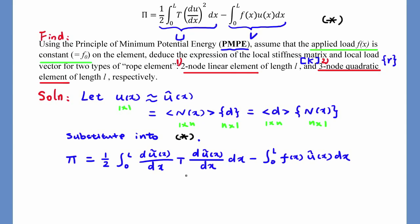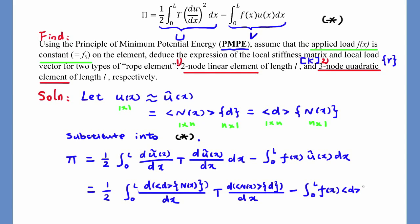Now, let's plug in u-tilde equal to row Nx times column d. We replace first u-tilde by row Nx times column d, second u-tilde by row dNx/dx times column d, and last u-tilde by row d times column Nx.